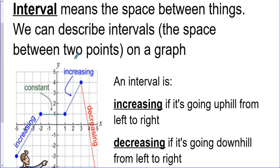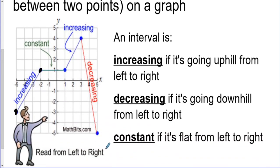On the graph, those two things are going to be points. For example, starting at negative 5 on the x-axis and traveling to the right to negative 2 — that section of the graph is increasing. When thinking about increasing and decreasing, we always read from left to right. Think about being a little car on a mountain: you'd go uphill, hit a flat part, then go downhill. Increasing means going uphill, decreasing means going downhill.